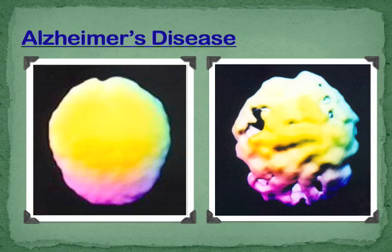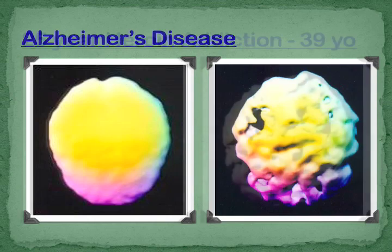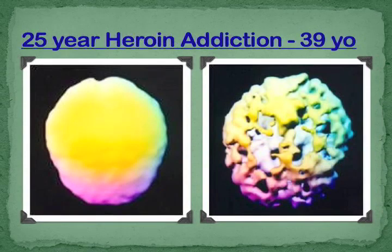We're going to look at some addictions and what these toxins do to our brain. Here's a normal brain, and here's a brain with heroin. This is a 39-year-old who has been using it ever since they were a teenager — this is worse than the Alzheimer's brain that we saw. We wonder why these people have trouble with decisions and thinking clearly.